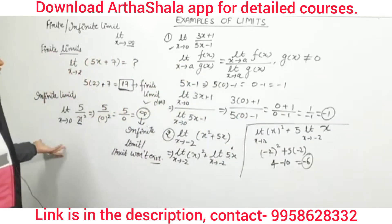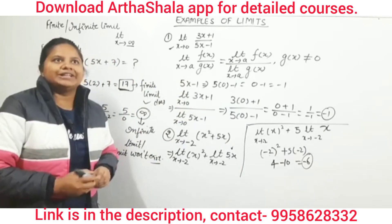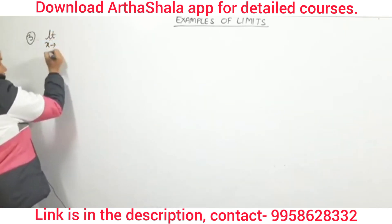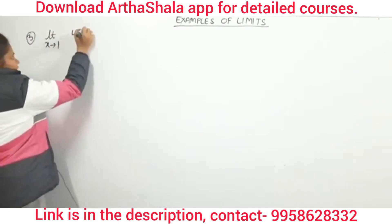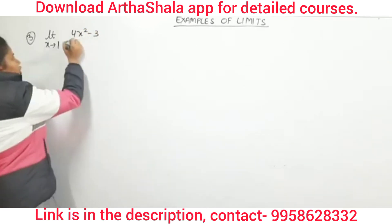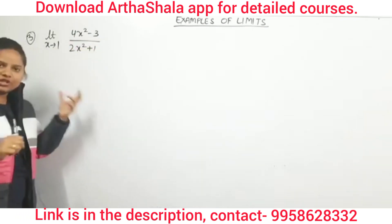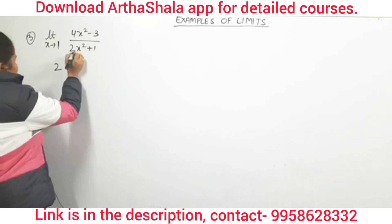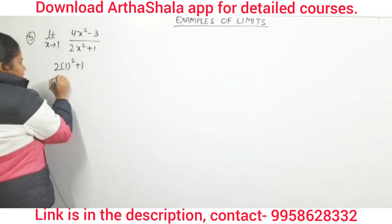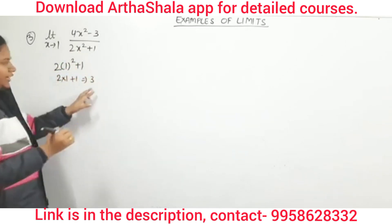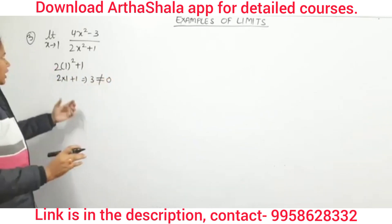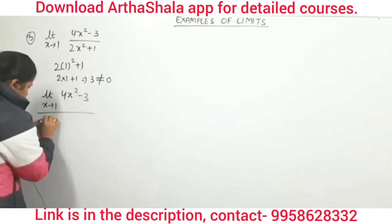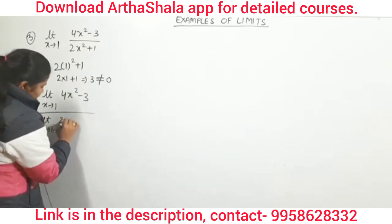So those were simple examples to understand finite and infinite limits. Now we will do a third example with a bit more detail. The third example is: limit x tends to 1 of (4x² − 3) / (2x² + 1). Since we need to apply the quotient rule, we first check the denominator: putting x = 1 gives 2(1)² + 1 = 3, which is not equal to 0. So we can apply the quotient rule.